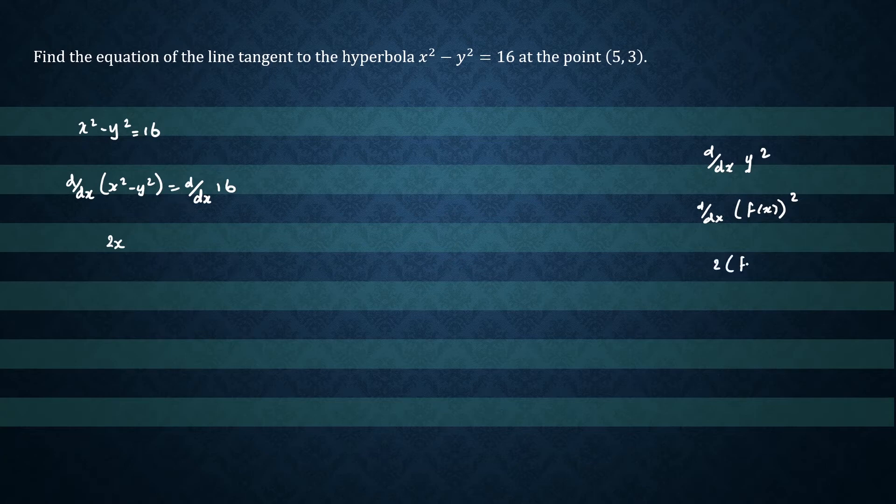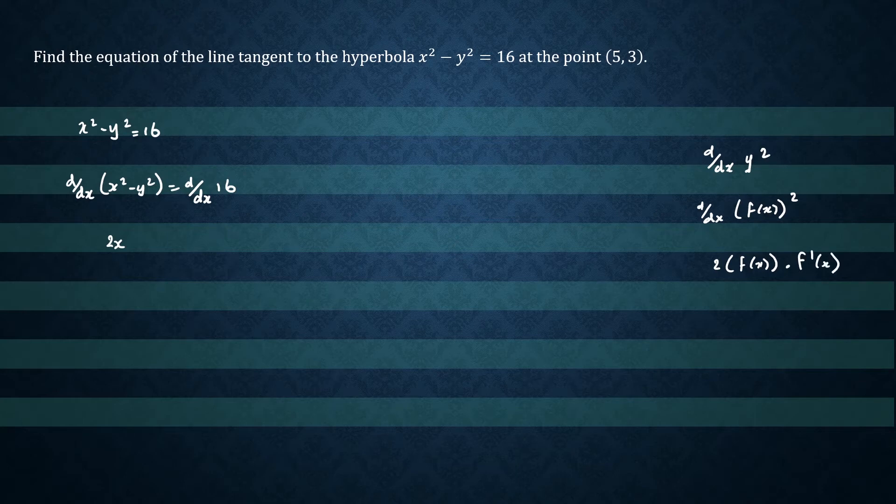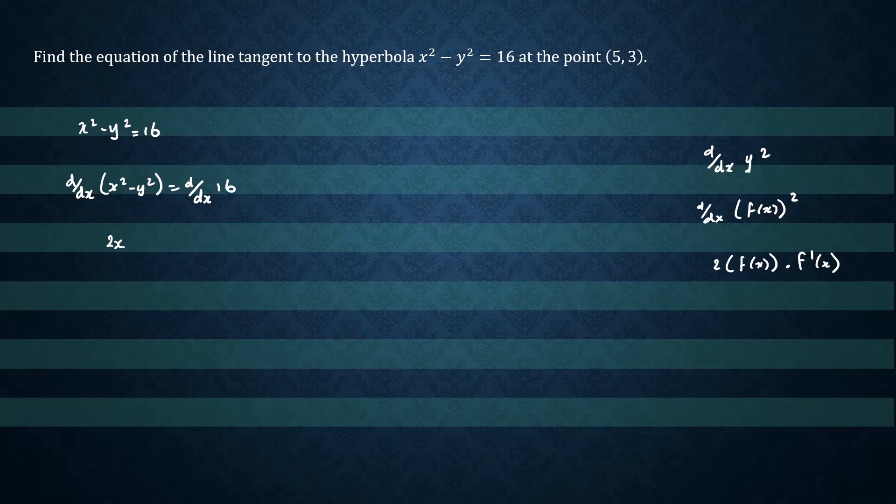We'd write 2f(x) times the derivative of f(x). That's just basically your chain rule. So referring back to our question...